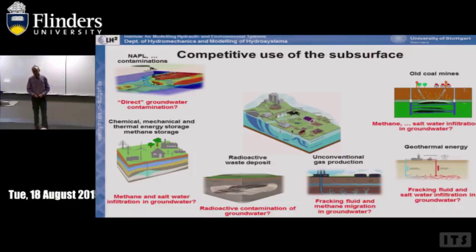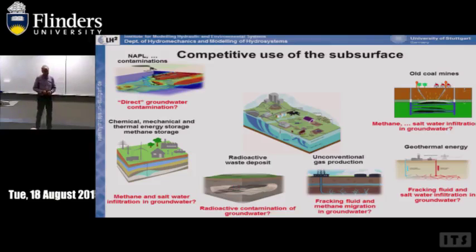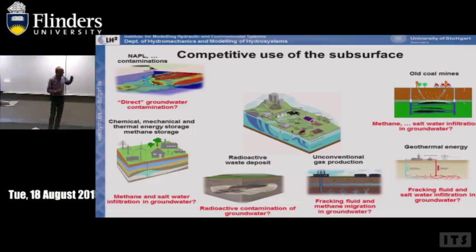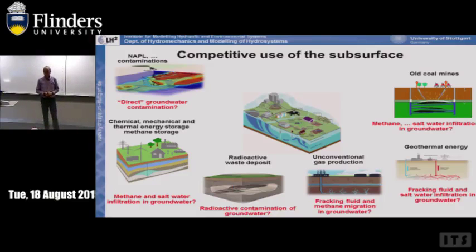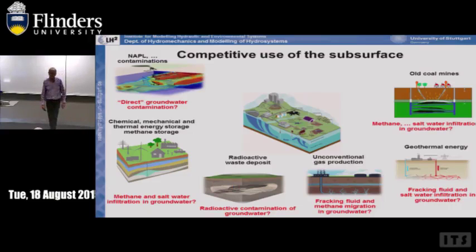Another big problem is old coal mines — I'm from the Ruhr area in Germany where we've produced coal for the last 150-180 years. As we close these mines, there is uncontrolled methane in the system, and shutting down the water management system causes an increase of the water table. This leads to uncontrolled displacement of methane into the atmosphere and displacement of contaminants — dioxin, heavy metals — into the groundwater level.